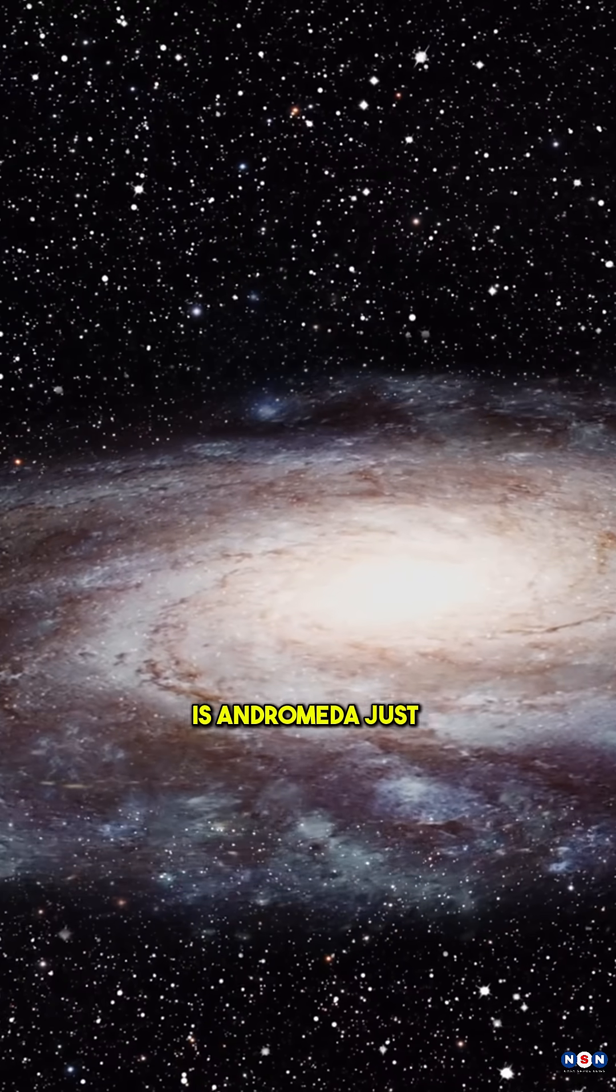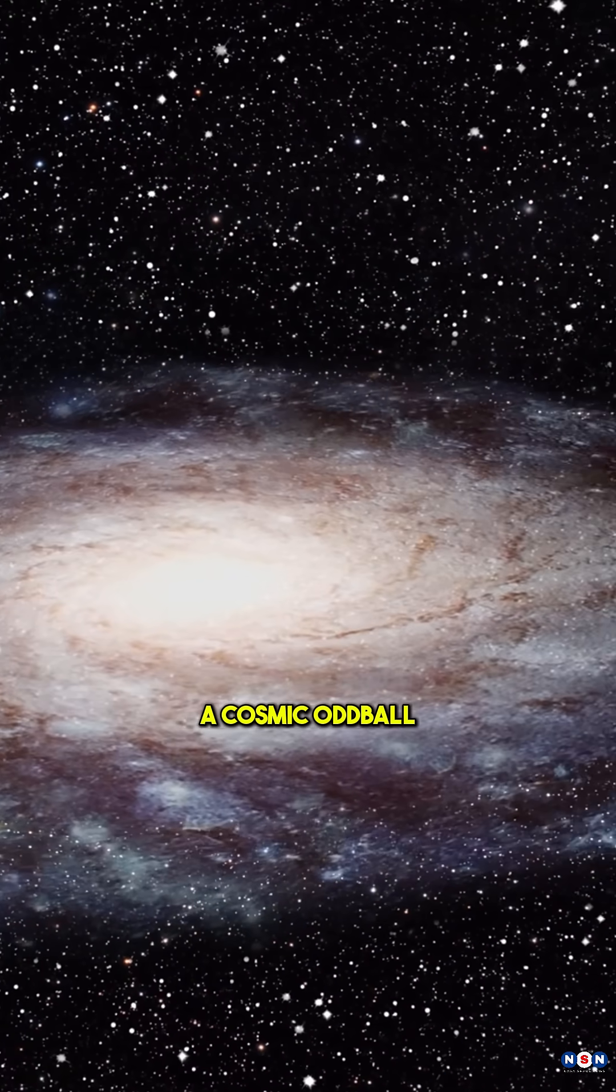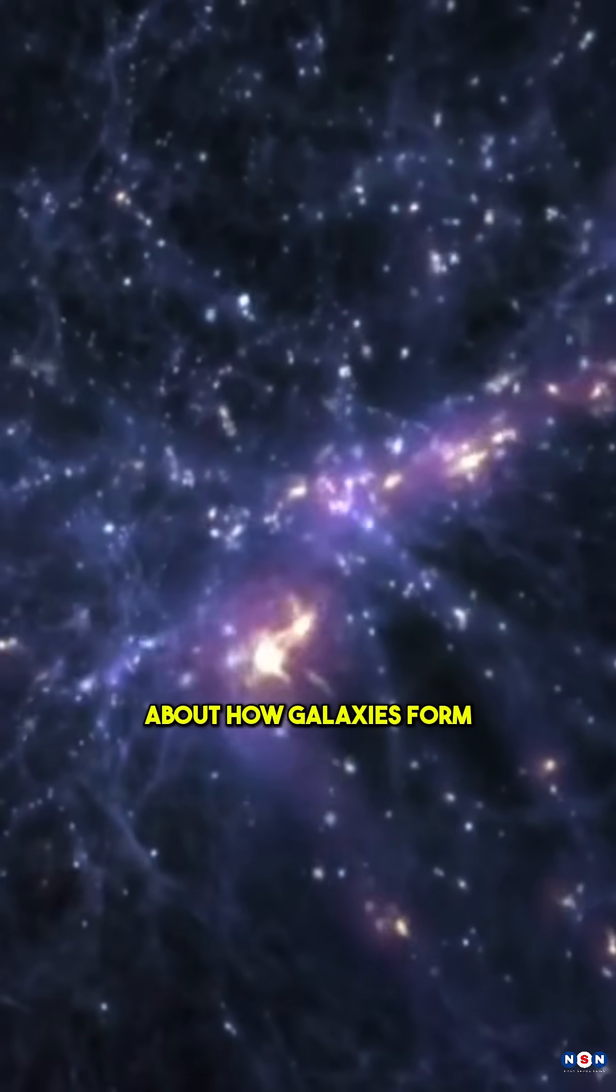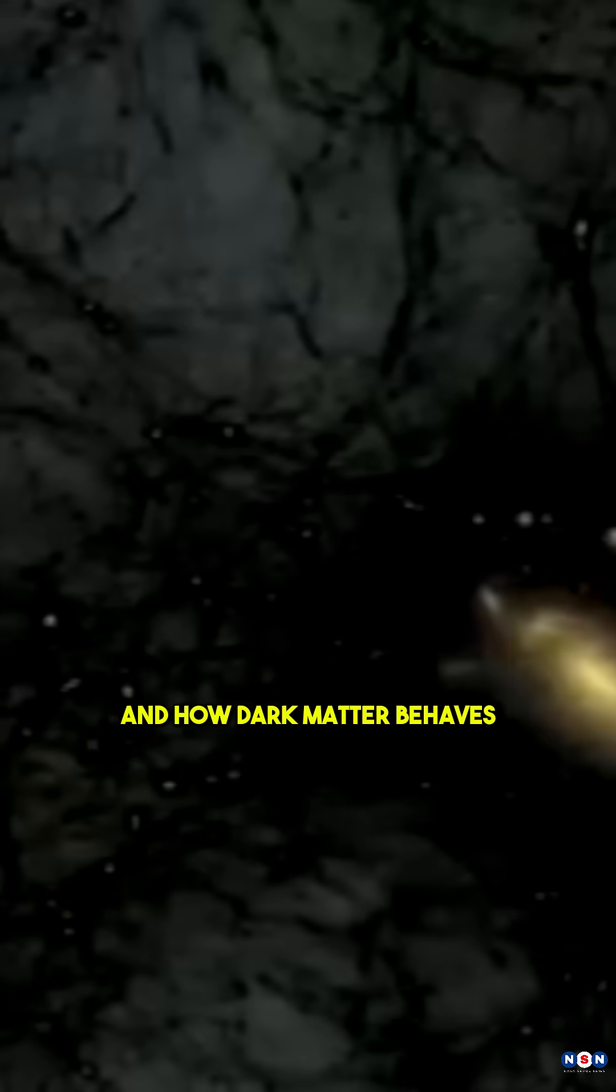So what's going on here? Is Andromeda just a cosmic oddball, or are our models missing something big about how galaxies form and how dark matter behaves?